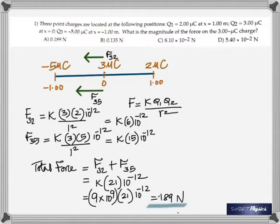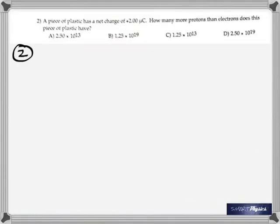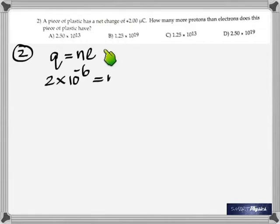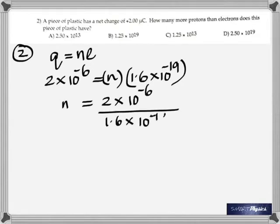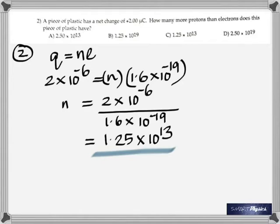Question two: a piece of plastic has a net charge of positive 2 micro coulomb. How many more protons than electrons does this piece of plastic have? For this we use q = n × e, where e is the charge of the electron. Protons have the same magnitude of charge as electrons, so you find n. The answer is 1.25 × 10¹³ protons.